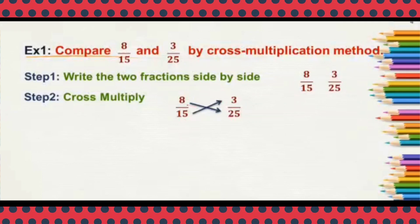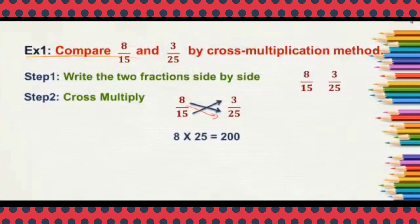What is 8 times 25? You have to multiply 8 into 25 — 8 times 25 is 200. And what is 15 times 3? 15 times 3 will be 45.